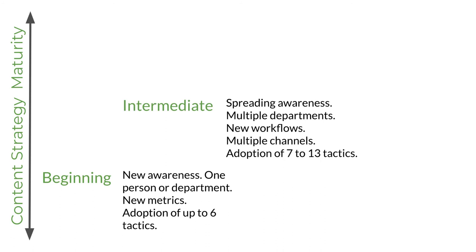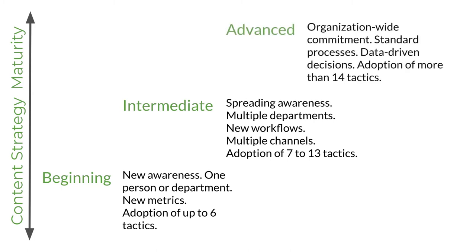At the intermediate level, there was growing awareness, with multiple departments involved that included new workflows. Multiple channels of publication were involved, and they had adopted seven to 13 of the listed tactics. At the advanced level, there was an organization-wide commitment to content strategy. Processes were standardized, they were making data-driven decisions, and they'd adopted more than 14 of the tactics.